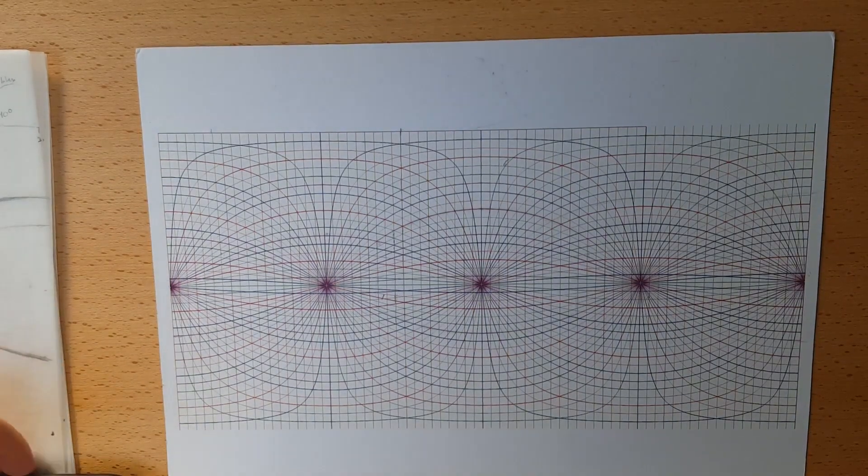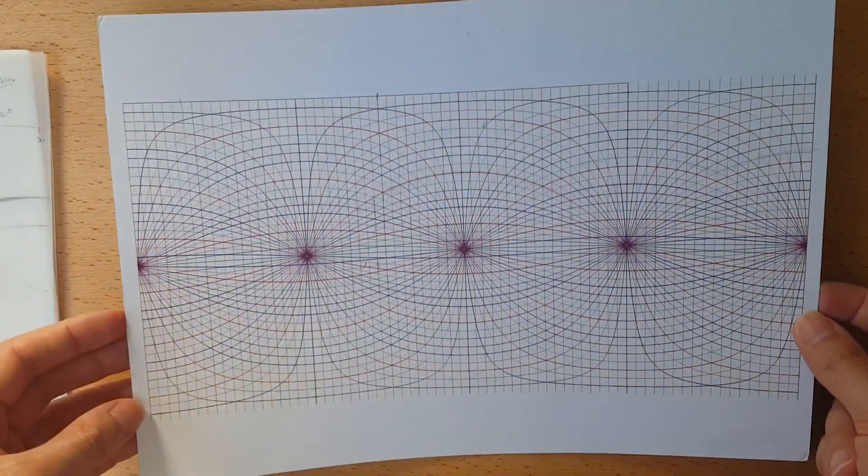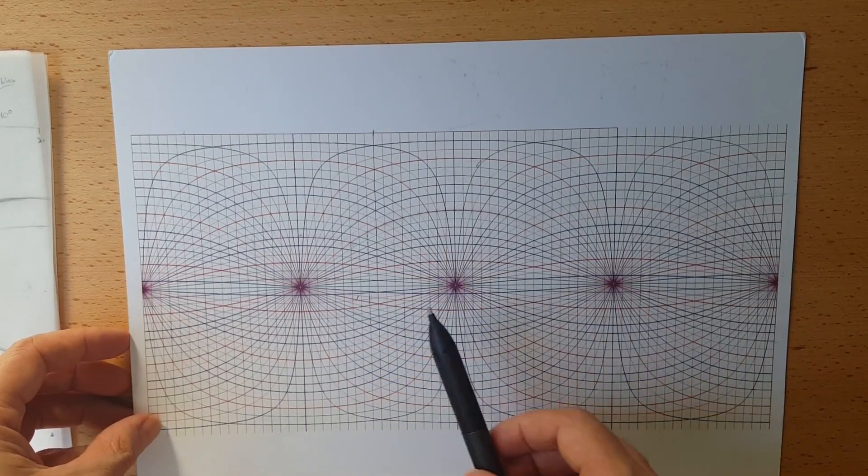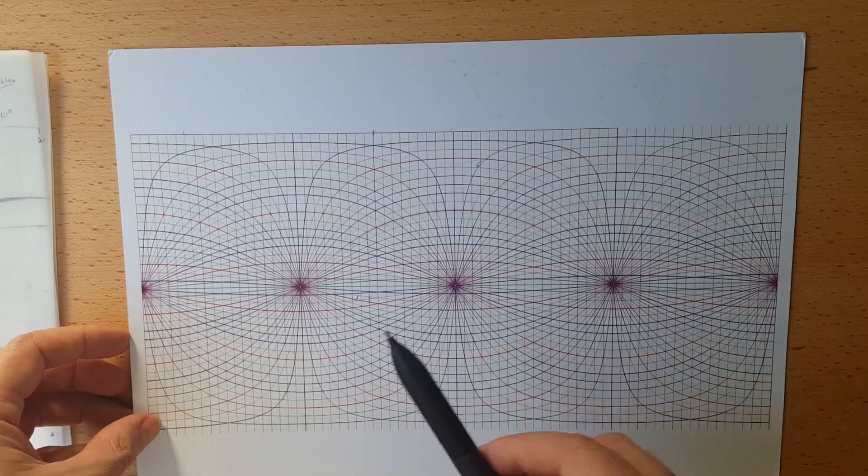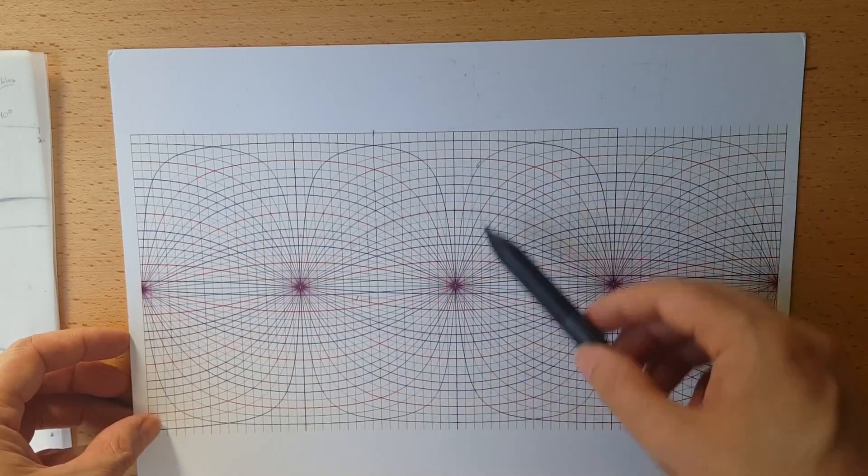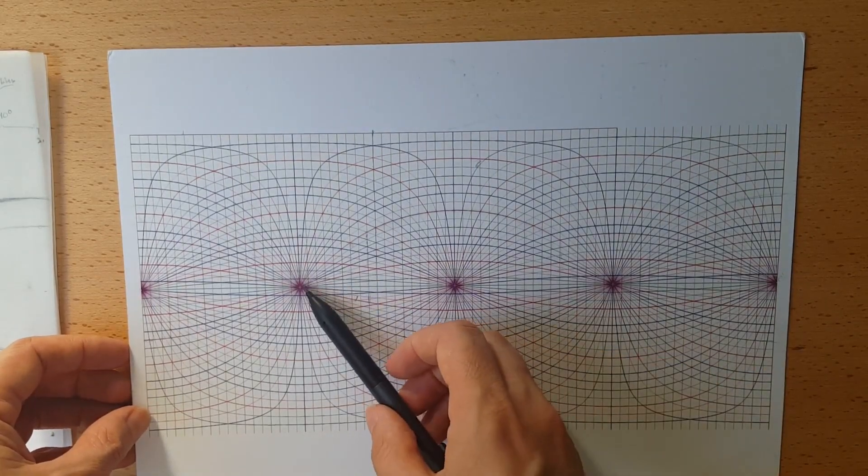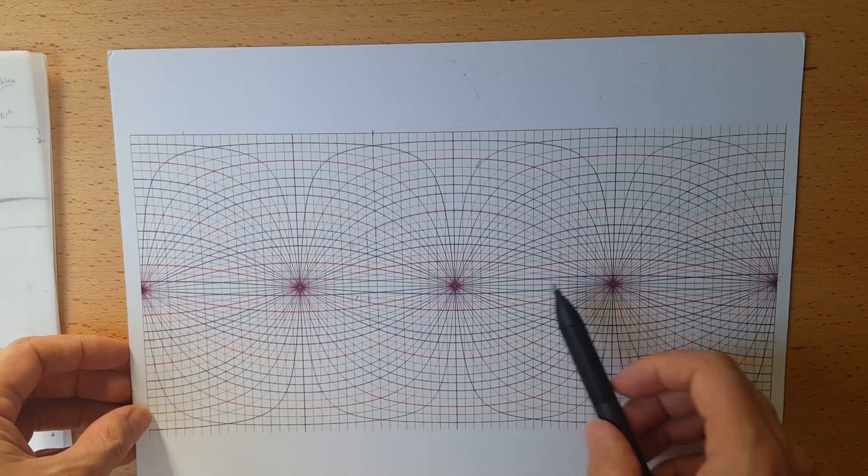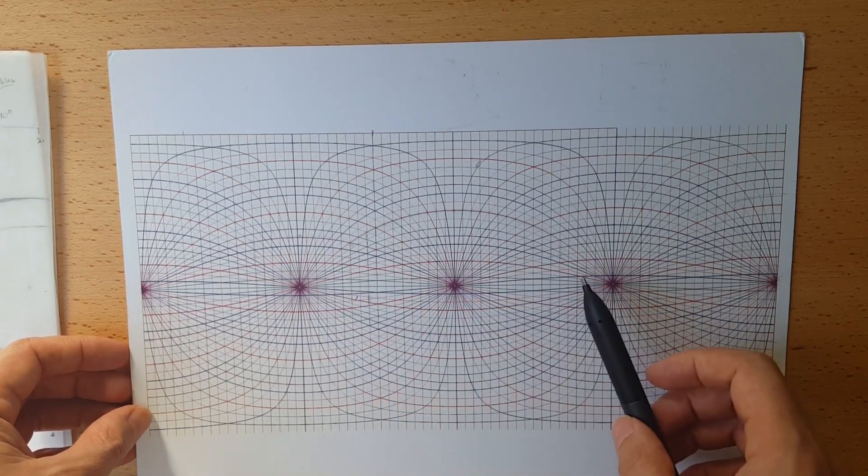If you've ever drawn in equirectangular spherical perspective, you have seen a grid sort of like this. These are the cardinal points: forward, left, right, and back. And the verticals are the images of true verticals in space.